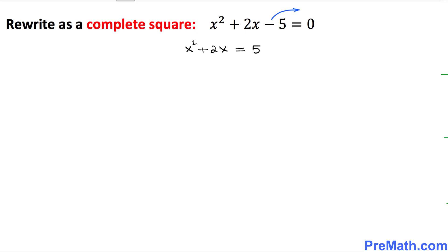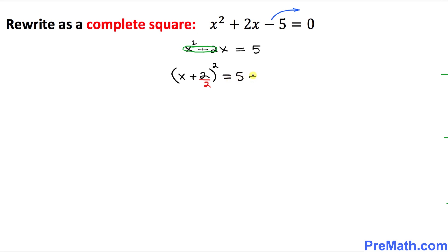In the next step, we want to complete the square. So we are going to put down this parentheses squared, and I am only focusing on the x plus 2 part. I'm going to write down x plus 2 right up here. The next step is, whatever this number is, I am going to divide it by 2. Equals to, we got 5 on the right-hand side, plus...